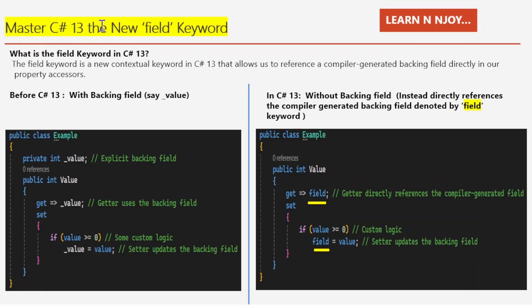Master C# 13 — the new field keyword. So what exactly is the field keyword? Simply put, it is a new contextual keyword in C# 13 that allows us to reference a compiler-generated backing field directly in our property accessors. This means we no longer have to manually declare a private field to store our property value. Instead, the compiler does it for us and we just use the field keyword in our getters and setters.